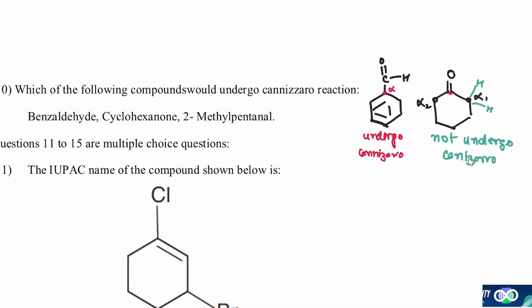Then 2-methylpentanal. It still has alpha hydrogen. As I say, this is the alpha carbon, so this will not undergo Cannizzaro.